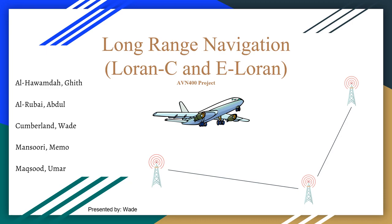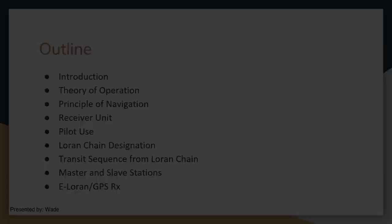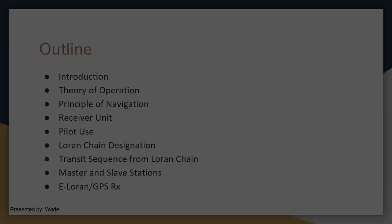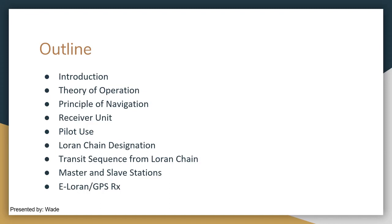Upon completion of this presentation, you should have a clear understanding of both LORAN-C and E-LORAN navigation systems. Topics that will be discussed will include the theory of operation of the systems, the basic principles of navigation with LORAN, the frequency of operation used for LORAN, functionality of the receiver unit, visual displays of the system, the numerical designation of a LORAN chain, the transit sequence from a LORAN chain, the transit format for master and slave stations, and E-LORAN/GPS receivers. Also, a brief outline of the history of the LORAN system will be included.